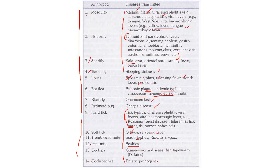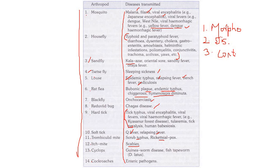When identifying spotters, we need to write three important points: first, the basic morphology of the spotter; second, the diseases transmitted; and third, the control measures — how are we going to control it. These three points need to be written for all spotters.